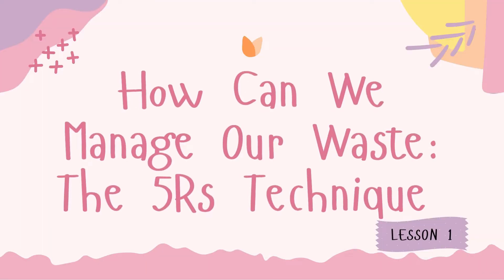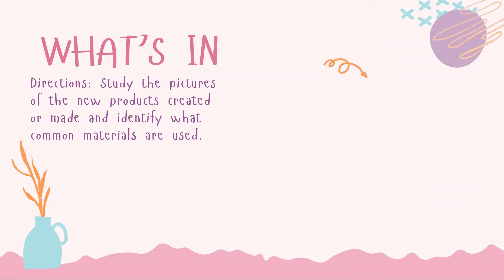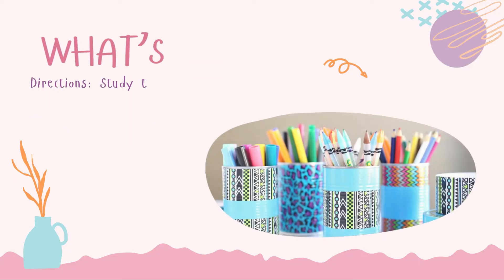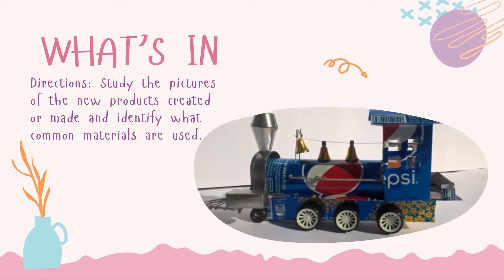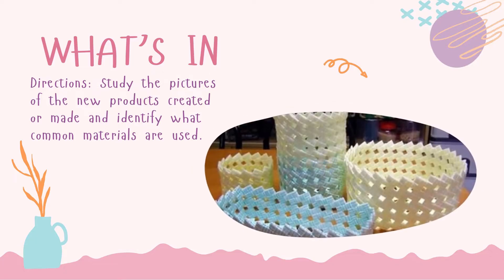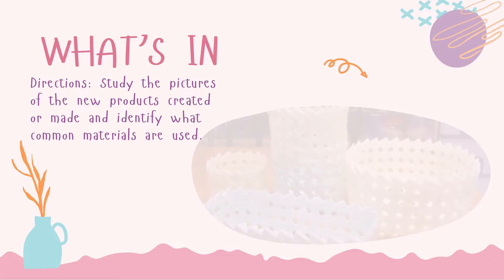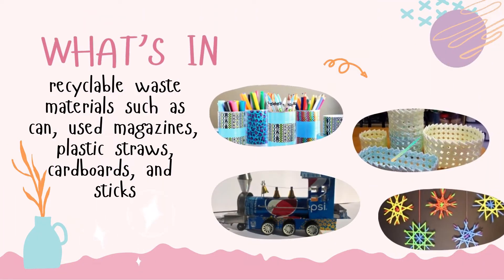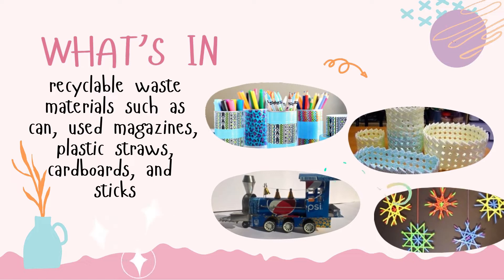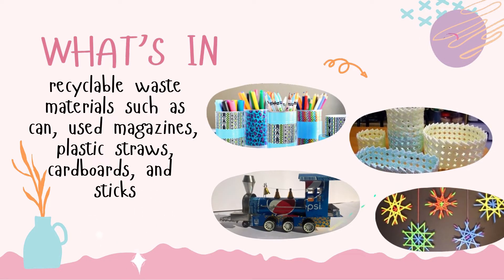Now we are going to discuss Part 1 of this module: How can we manage our waste? The 5 R's Technique, Lesson 1. Direction: Study the pictures of the new products created or made and identify what common materials are used. As you can see, these products are made up of recyclable waste materials such as scrap paper, used magazine, plastic straws, cardboards, and sticks.